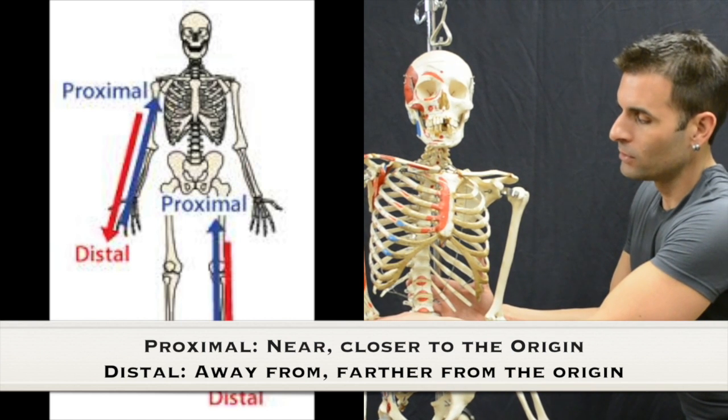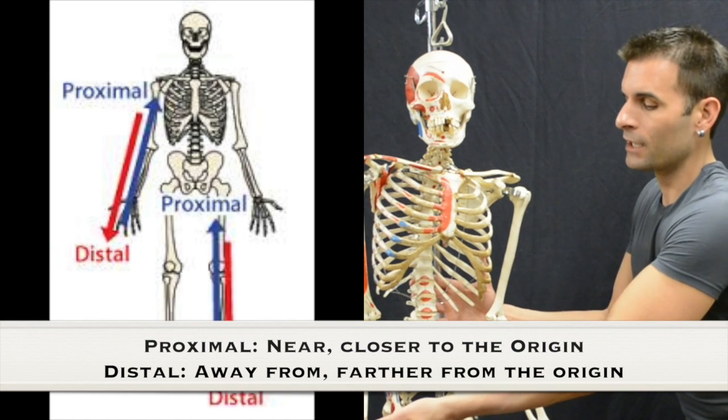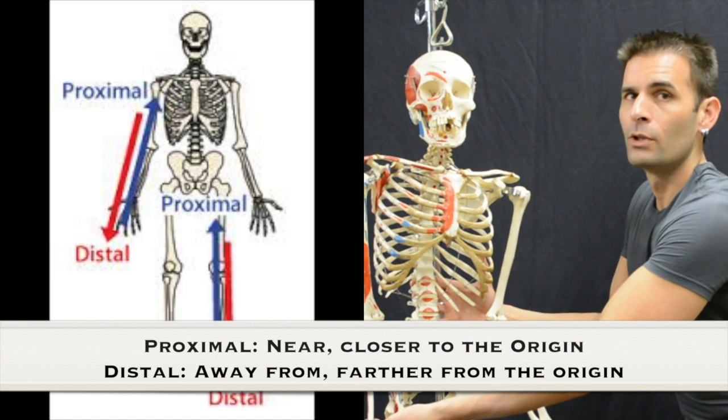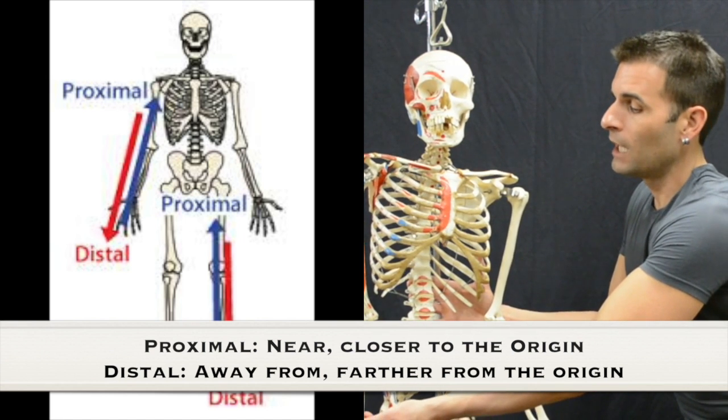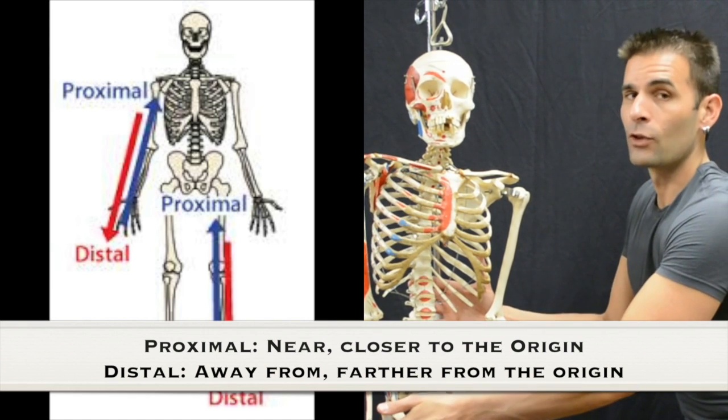So the elbow is distal to the shoulder, but it is proximal to the wrist, meaning it is closer to the point of origin, which is the shoulder, than the wrist is.